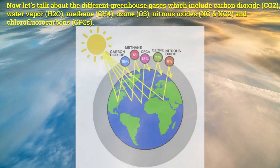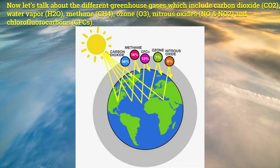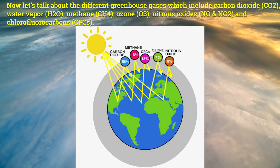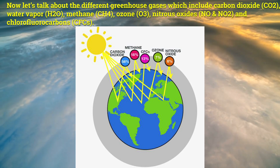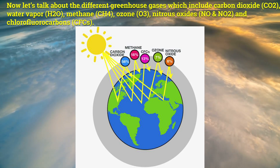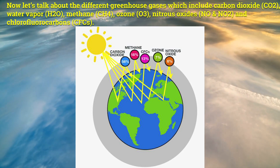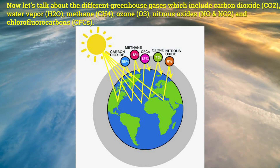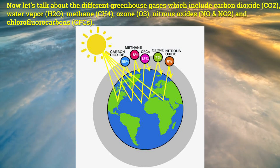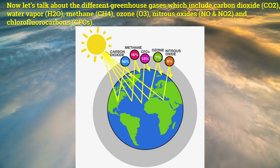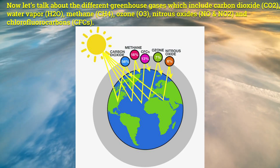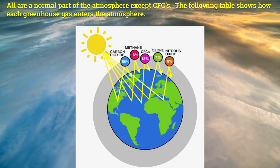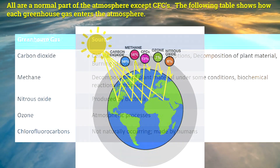Now let's talk about the different greenhouse gases, which include carbon dioxide (CO2), water vapor (H2O), methane (CH4), ozone (O3), nitrous oxide (NO and NO2), and chlorofluorocarbons (CFCs). All are a normal part of the atmosphere except CFCs.